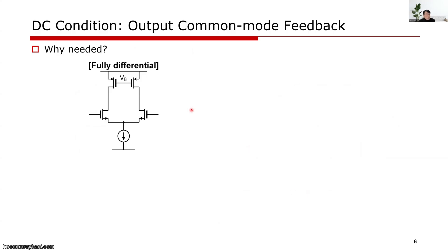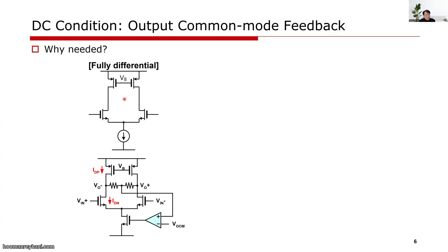Why? Let's consider this fully differential simple amplifier. If you look at the output, it's a stack of PMOS and NMOS current sources. Who determines the voltage level there? No one does, because it's a current source to current source connection. Without any load definition, we cannot tell the voltage there. So what we need to do is sense the common level of the two differential outputs and then make a negative feedback circuit so that the DC level, or common level, becomes VOC.